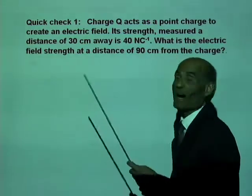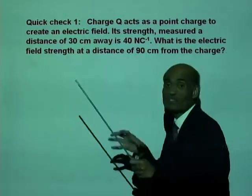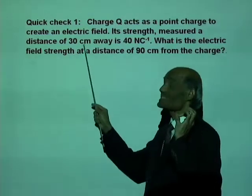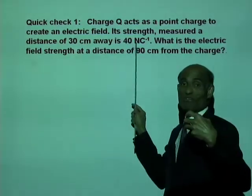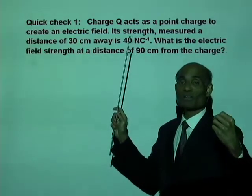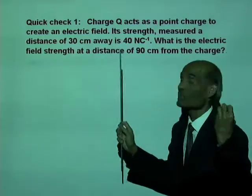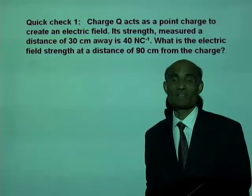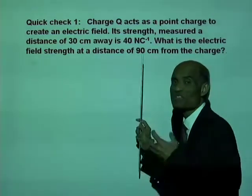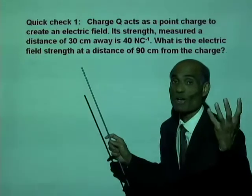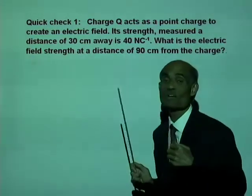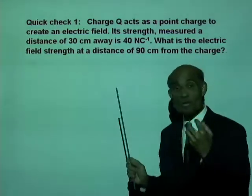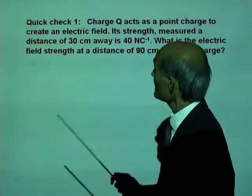Well, I have a charge Q placed at a point. And I measured the electric field due to that charge 30 cm away from it. The field has 40 N per C. Now the question is, use that information to find the electric field at a distance 90 cm away from it. Tell me, will the field at this 90 cm be greater or smaller than the field at 30 cm away from the charge? Well, the field at that point will be much weaker. Let's see how we can do that.